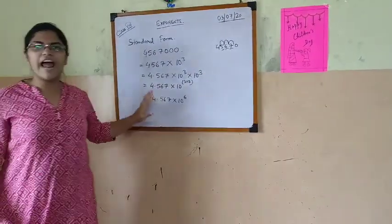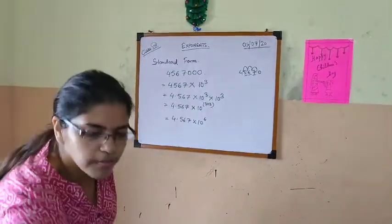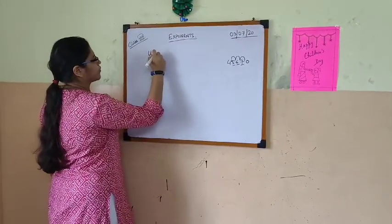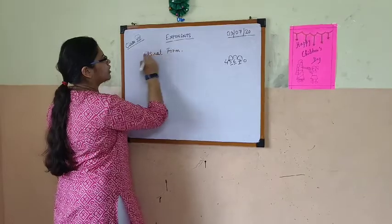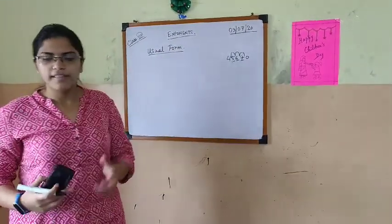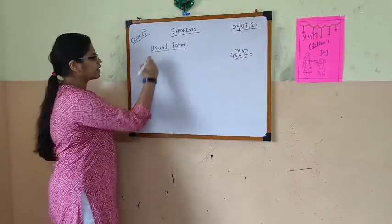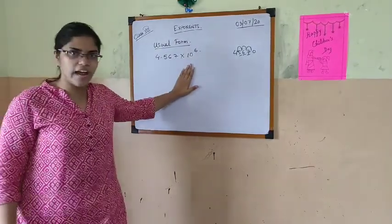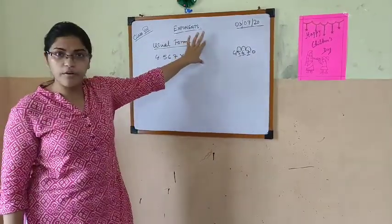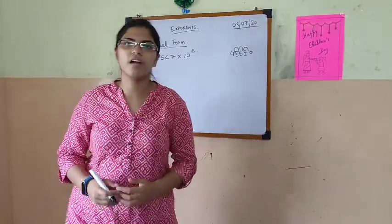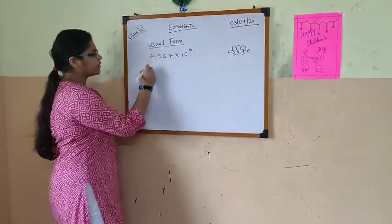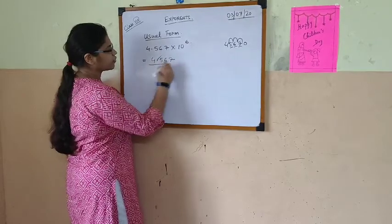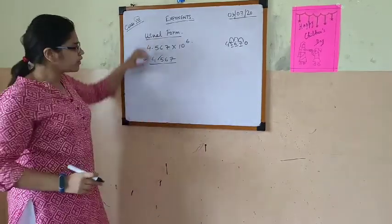So this is the standard form for writing an exponent. Now the next one will be our usual form. Usual form is just the opposite of standard form. That means suppose we were having the number 4.567 into 10 to the power 6. So this was the last number we got in standard form. Converting this into the usual form means making it just like before. So that means here if I remove the point, we have to look at how many digits we are removing — 1, 2, 3 digits.